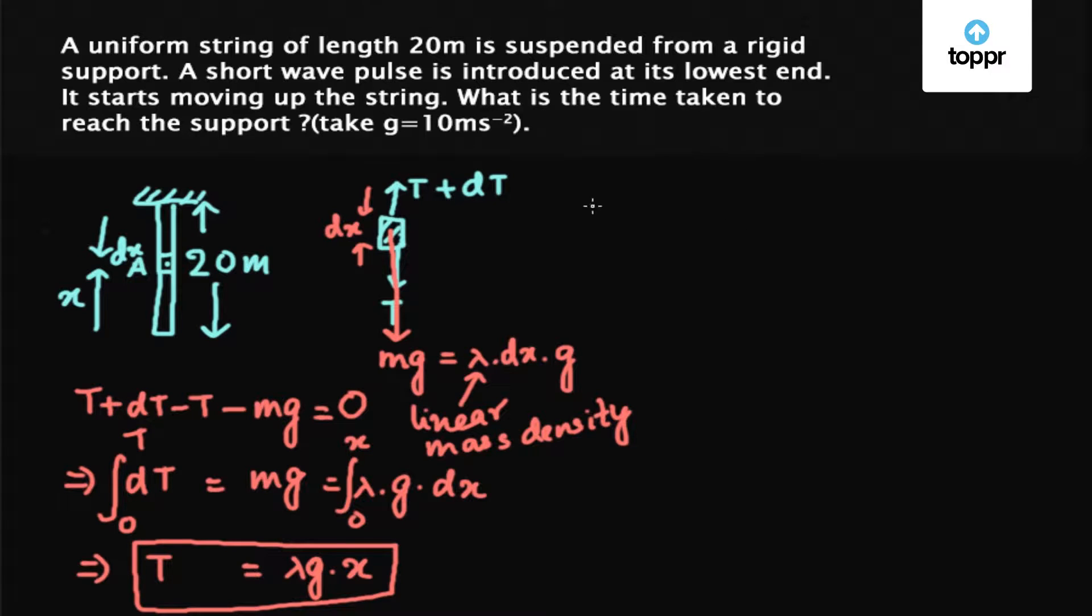Now the velocity at this point, that is A, let's say it is given by v_x equals root over the tension at this point divided by the linear mass density, that is lambda.